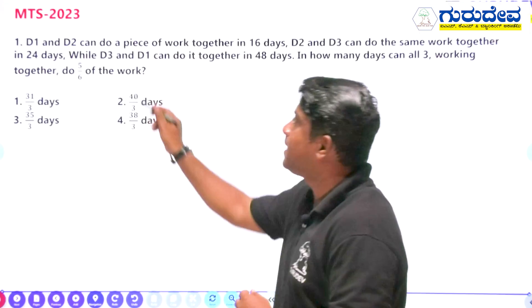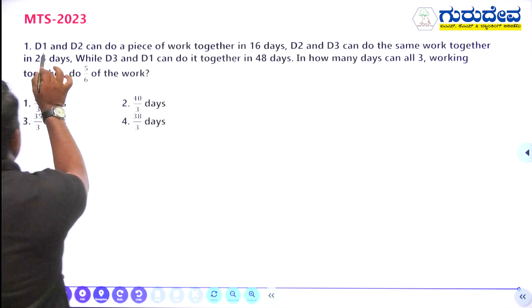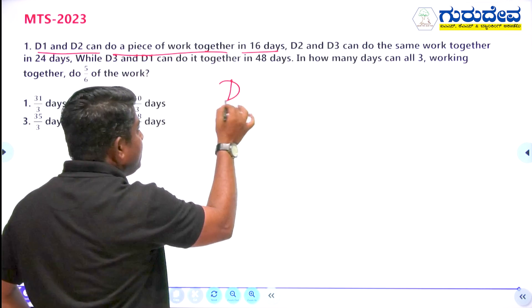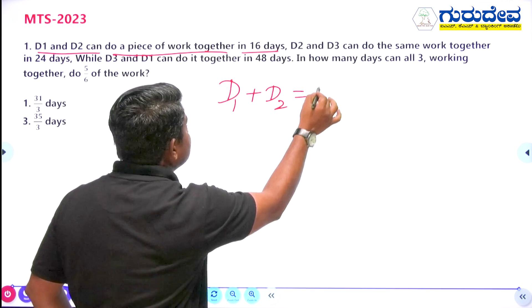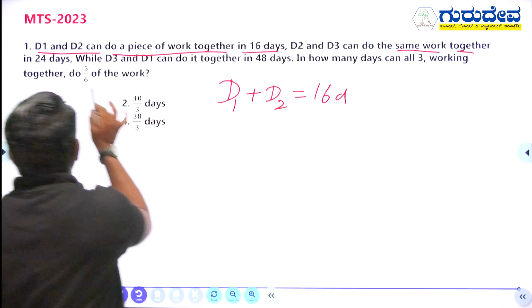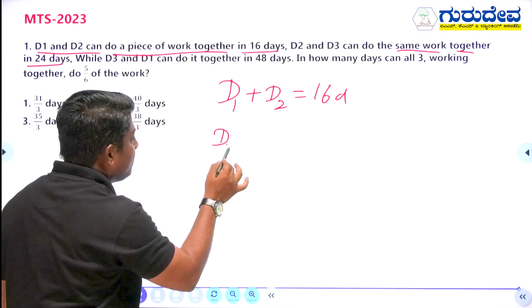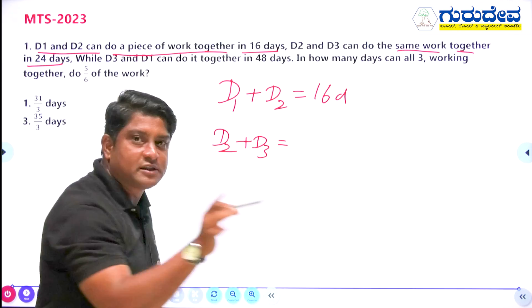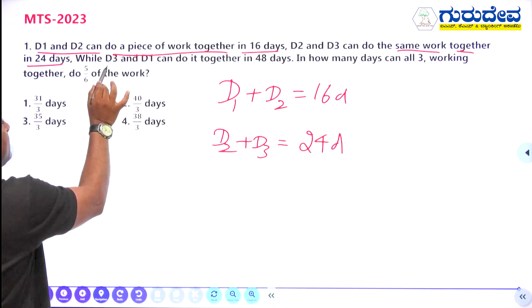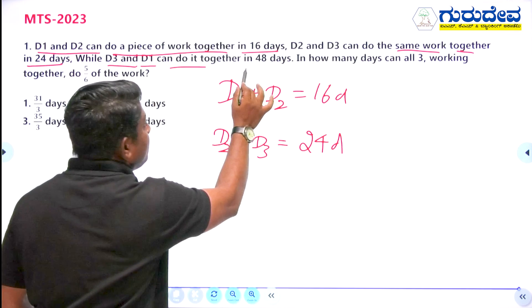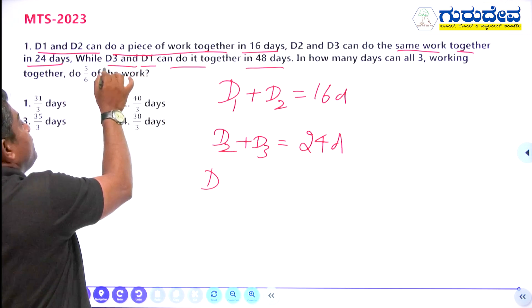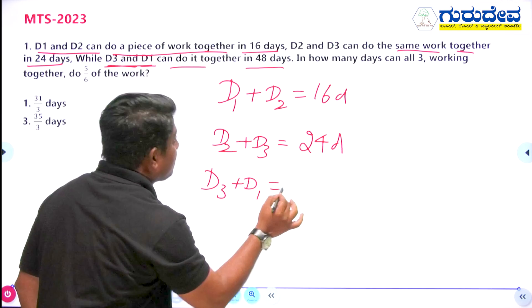The first question: D1 and D2 can do a piece of work together in 16 days. D2 and D3 can do the same work together in 24 days. D3 and D1 can do it together in 48 days.